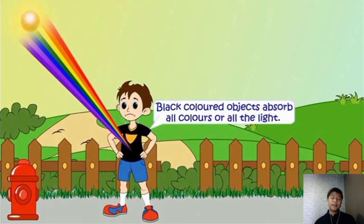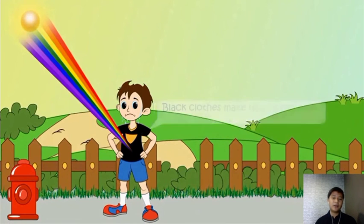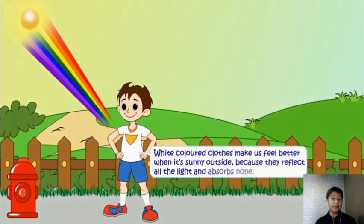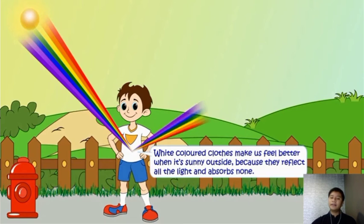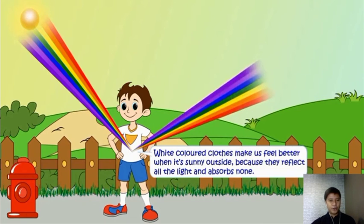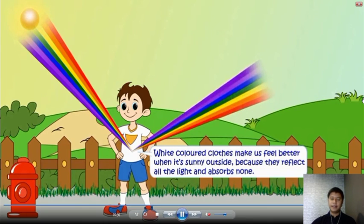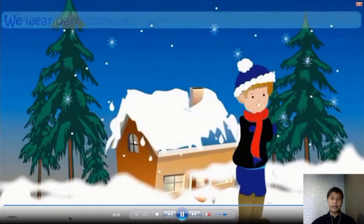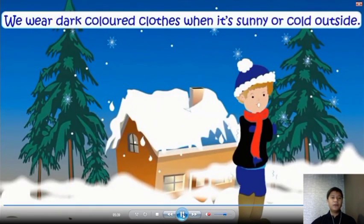Black colored objects absorb all colors. That's why black clothes make us feel hot in the sun because they absorb more light. White colored clothes make us feel better when it's sunny outside because they reflect all the light and absorb none. We should wear white clothes when it's sunny or hot outside, and we wear dark clothes when it's cold outside.